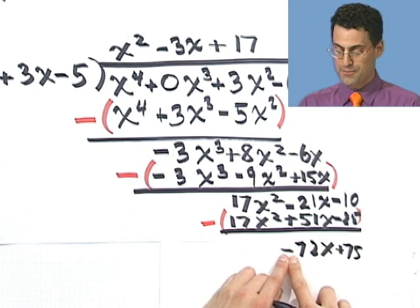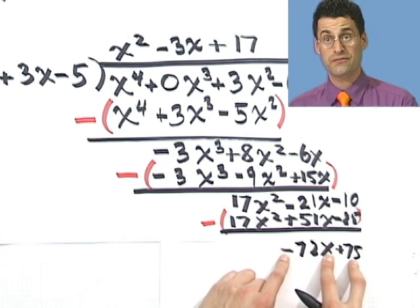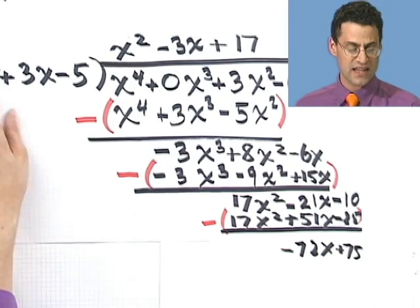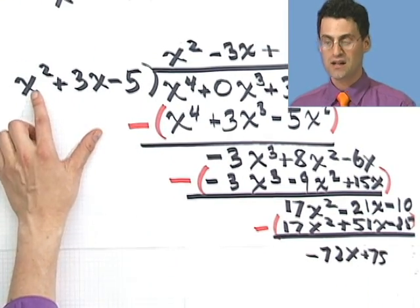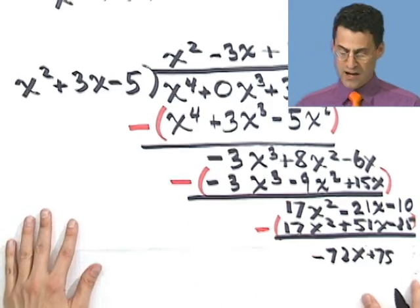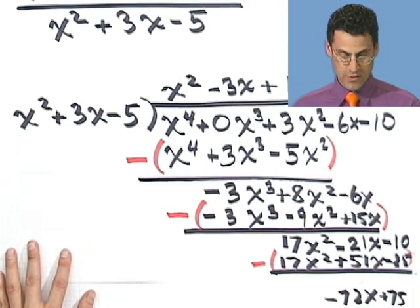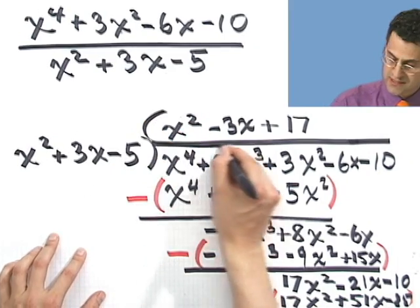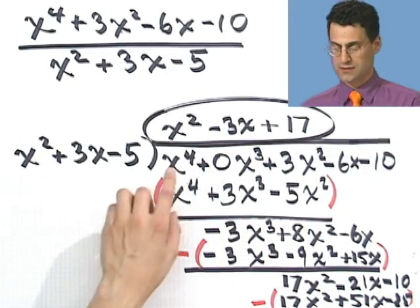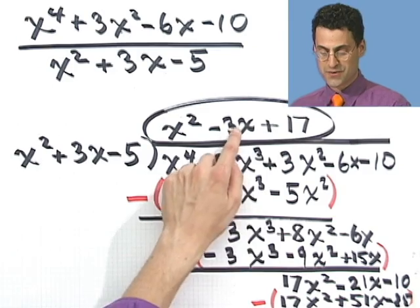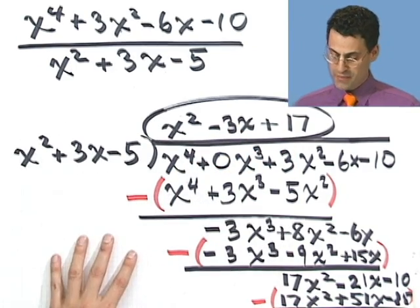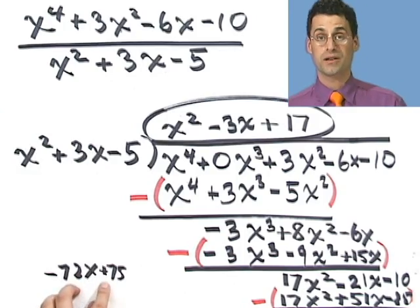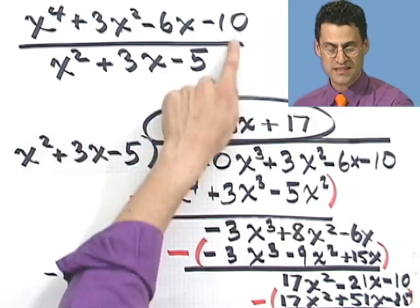And notice that minus 72x plus 75 actually is a smaller polynomial than this. This just has x's in it. And this has x squareds in it. So in fact, that's the remainder. And so what I see is the following. What I see is the answer is this. This is the quotient. x squared minus 3x plus 17 with a remainder of minus 72x plus 75. So what is this thing if you long divide it out? It's just that thing with the remainder of minus 72x plus 75.